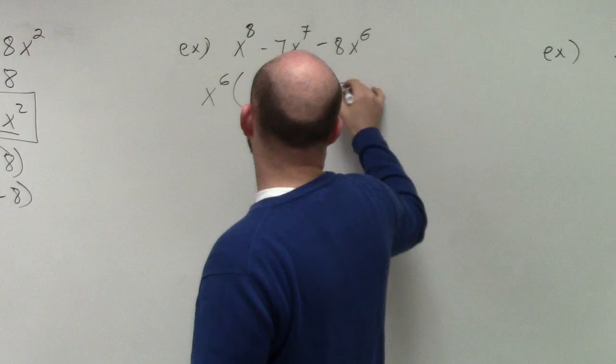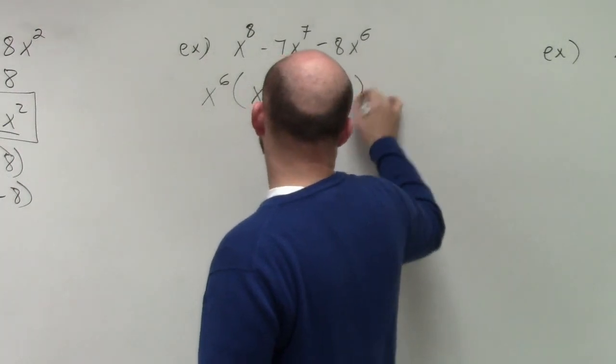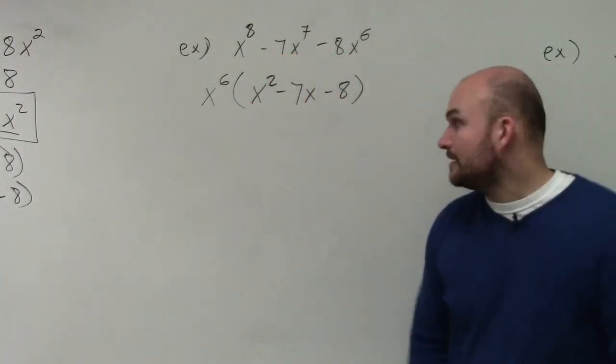And then here, we have negative 8, just 8, right? Because remember, it's x to the 6th, it's already there. So cool.